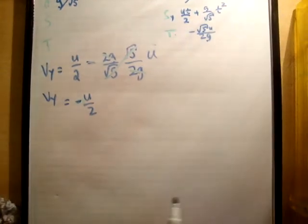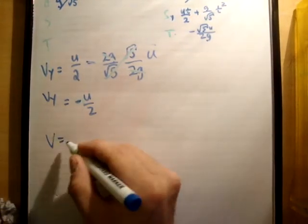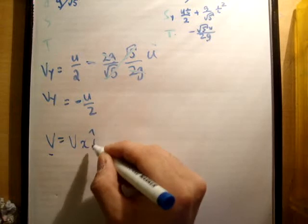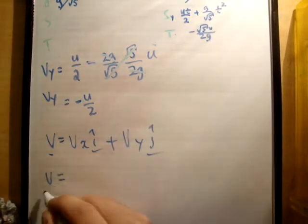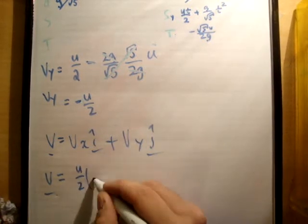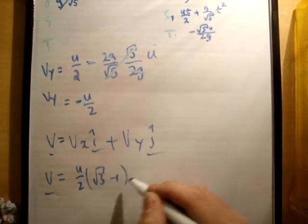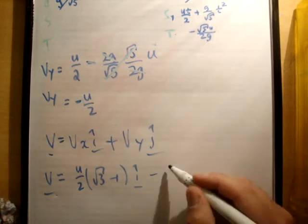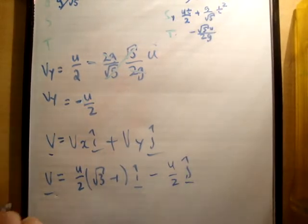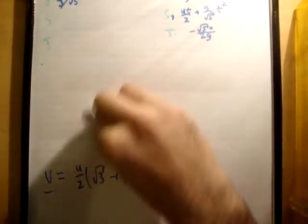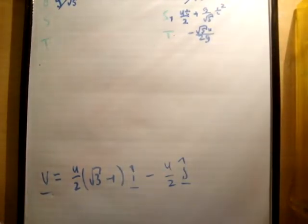So what we have is as follows. We have v is equal to v sub x i hat plus v sub y j hat, and v is equal to u over 2 root 3 minus 1 i hat minus u over 2 j hat. So it's time to suppose, I think, to look at a diagram.